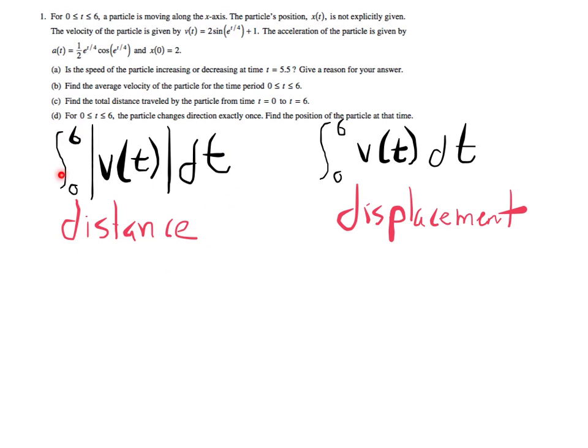Distance traveled is the integral from 0 to 6 of the absolute value of v of t dt. If we had just done the integral of v of t without the absolute value, that would give displacement. The absolute value takes anywhere where velocity was negative — when we were traveling left — and turns it positive, as if we were always going the same direction. Plug that into your calculator, making sure absolute value is inside the integral, and you get about 12.573. The AP exam requires at least three decimal places.